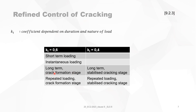In the crack formation stage, Sigma S equals FYK — the yield strength. In the stabilized cracking stage, Sigma S is smaller than FYK. As a designer, you have to decide which factor to use, but you may not know which cracking phase you are in, which makes this a little confusing.